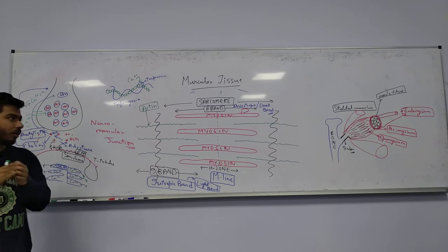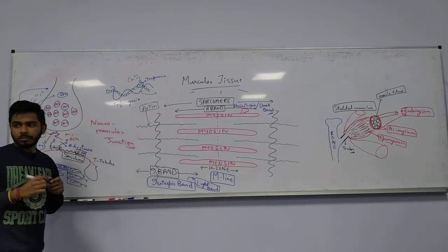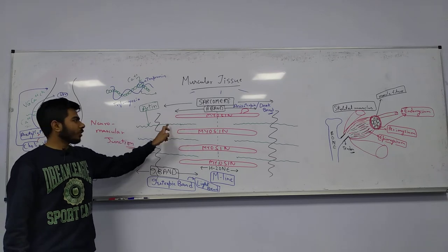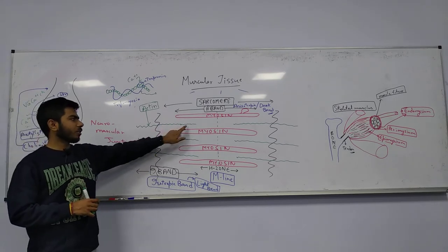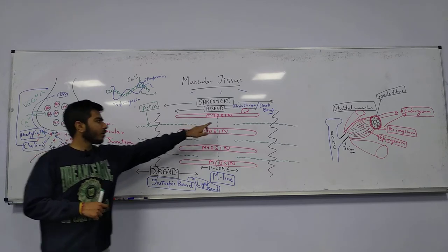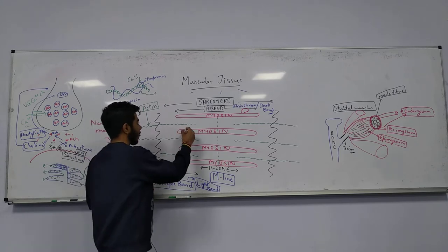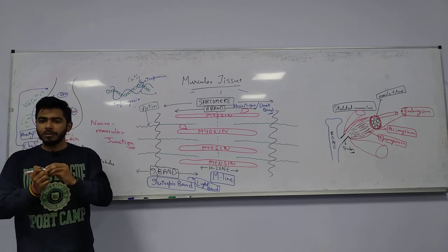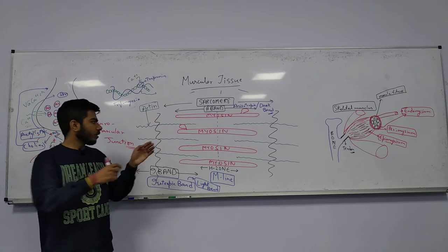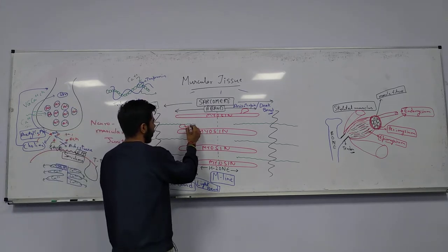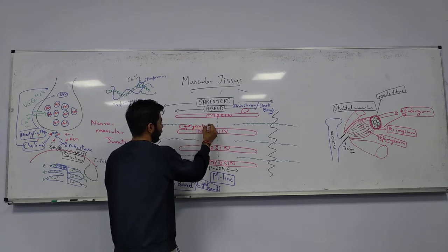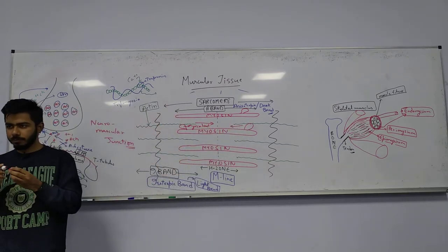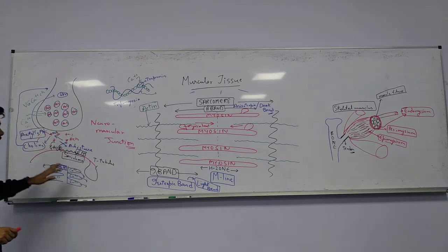As calcium ions bind to troponin, tropomyosin falls apart. This exposes the binding site on actin for the myosin head. The myosin heads can now bind to actin, and with the help of ATP they bring the actin filaments towards the center of the sarcomere.